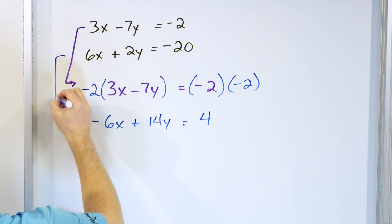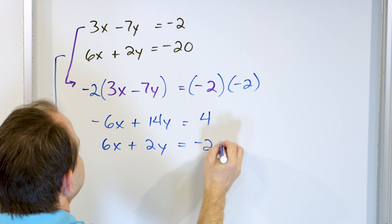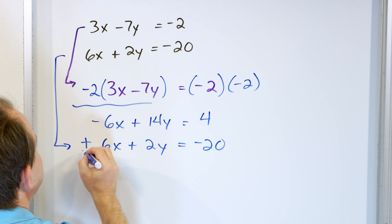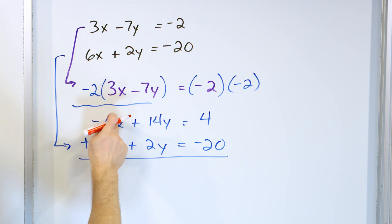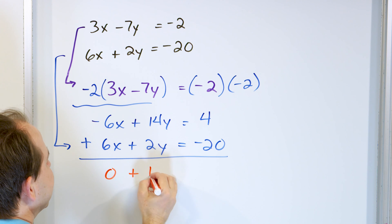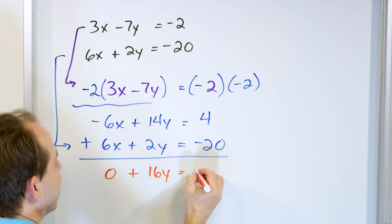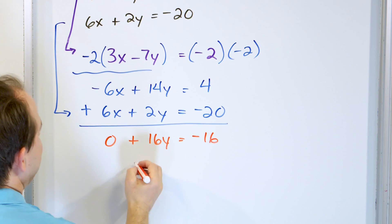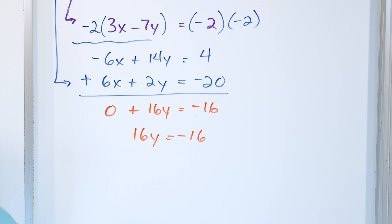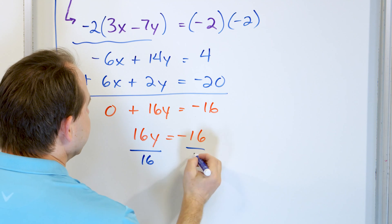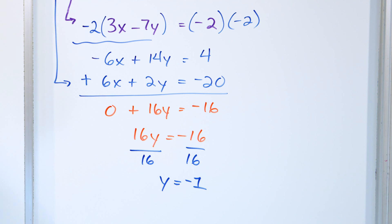Taking this new equation and writing the second equation underneath: positive 6x plus 2y equals negative 20. Now we can add these together — the x terms cancel to 0, and the y terms give 14y plus 2y equals 16y. Adding 4 plus negative 20 gives negative 16. So we have 16y equals negative 16, and dividing by 16 gives y equals negative 1.